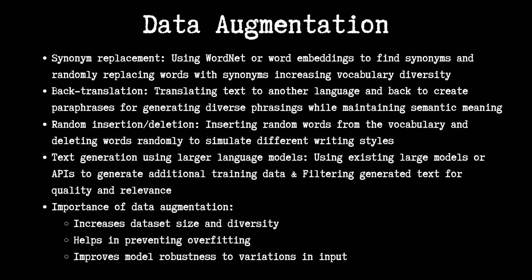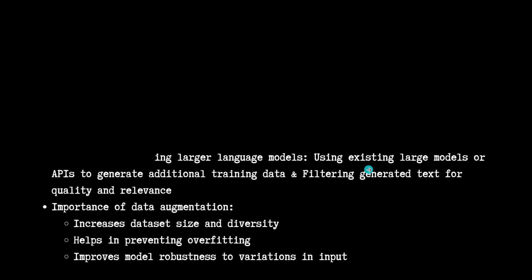The importance of data augmentation: it increases data size and diversity, makes the model more robust by handling various inputs, and prevents overfitting. You can also use larger LLMs — for example, proprietary APIs like ChatGPT or Claude — to generate additional data. Make sure you follow their licenses. With that, the data-related stages (data collection and data processing) are complete.